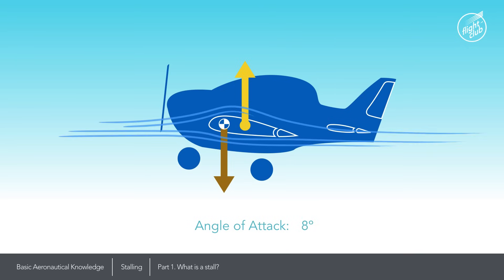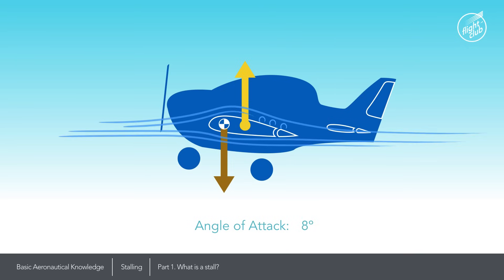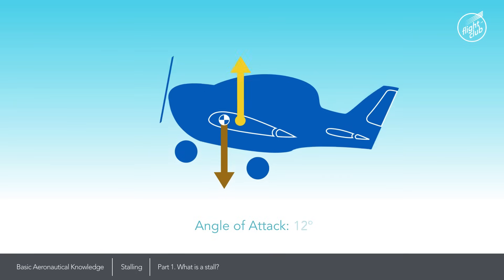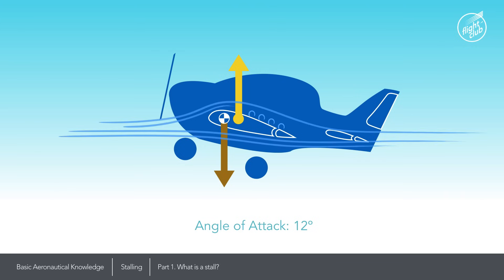As the angle of attack increases, the top airflow becomes turbulent and less effective at the trailing edge of the wings. Consequently, the lift vector moves forward where the stronger lifting air pressure system forms. Further increasing the angle of attack causes the top airflow to become more turbulent at the trailing edge and start to separate away from the wings. Most of the lift is now generated near the leading edge of the wings. Thus, the lift vector moves further forward, closer to the weight vector. Consequently, the aeroplane becomes less stable since the moment between lift and weight reduces.